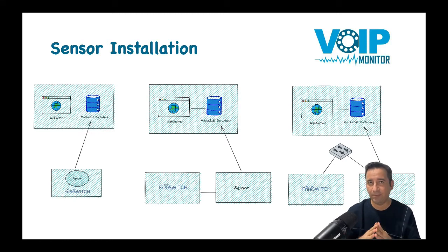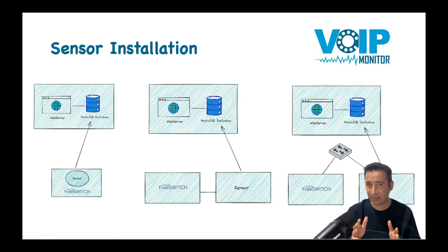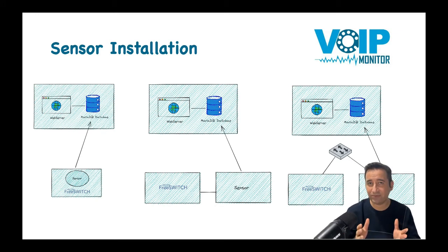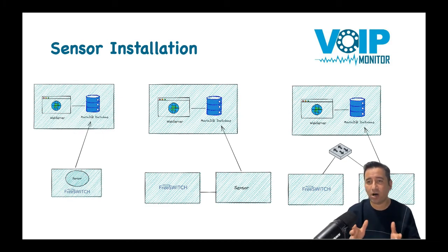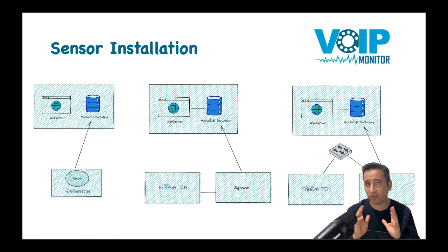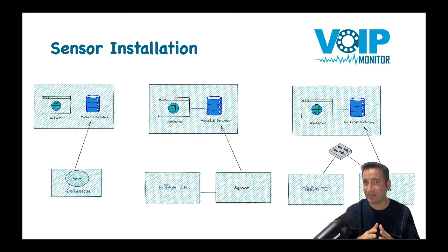The problem is that it will use the same hardware resources such as RAM, CPU, and network, and it may cause some problems under high load. Also, you cannot install the VoIP Monitor sensor on non-Linux operating systems. So if you have a 3CX system running on Windows, or a PBX such as CUCM or Avaya where you are not allowed to install any package on the same server, then the first method is not a solution.